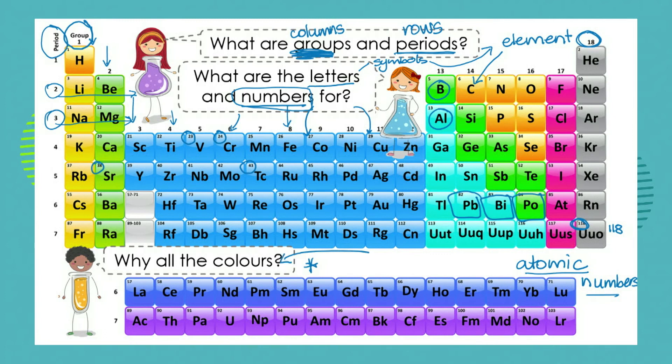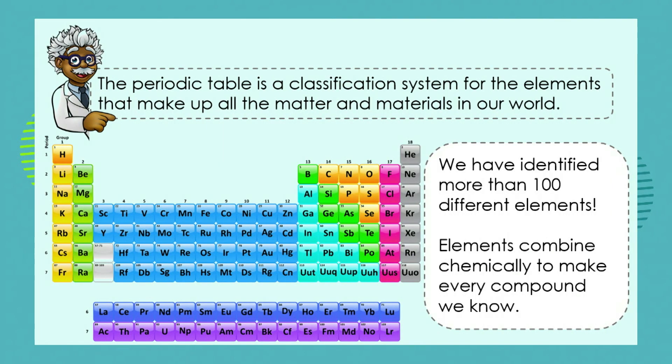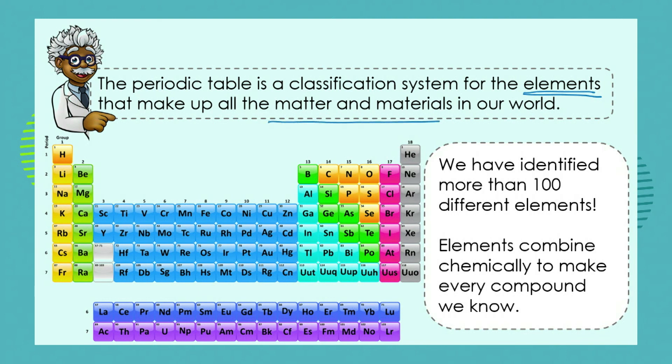Why all the colours? Well, you will often see periodic tables that don't have colour. But a lot of the periodic tables that we use to teach about the different elements do have colour, because the colour helps us understand the different properties. So all the elements that are indicated with the same colour tend to have the same characteristic, and that helps us to understand the properties. So the periodic table is a classification system — no fancier than your classification system of the sweets that you made up — but this classification system is for the elements that make up all the matter.